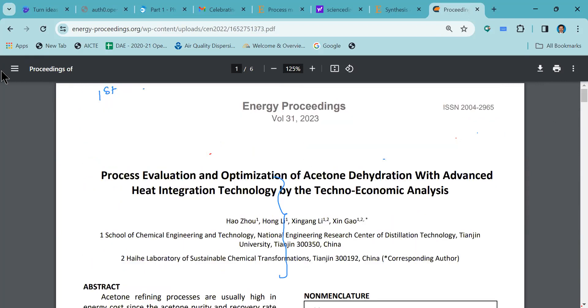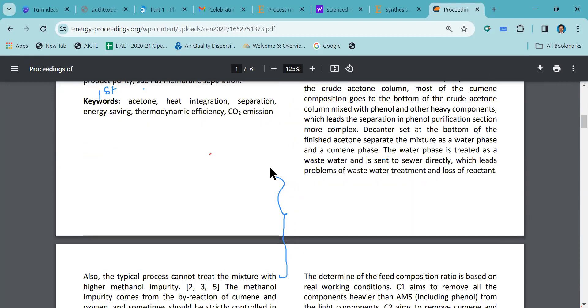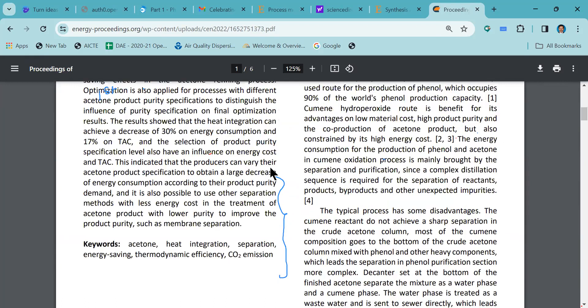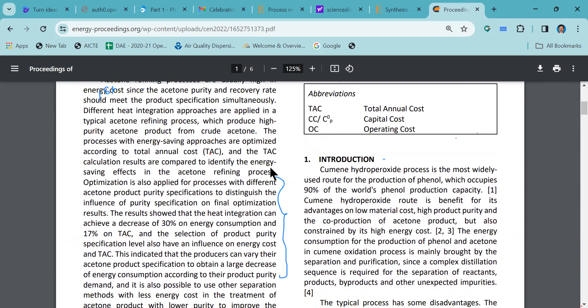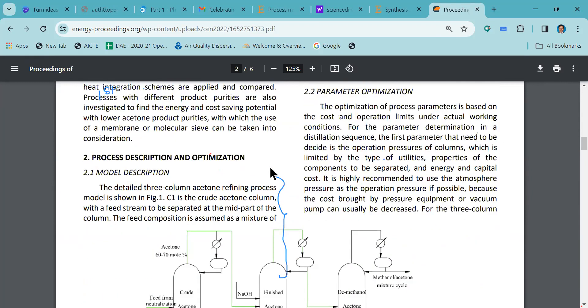The next one is we have to go to the different sections available. After abstract, what is the next section available? You go to the next section. The next section is the introduction part, and then comes process description and optimization.